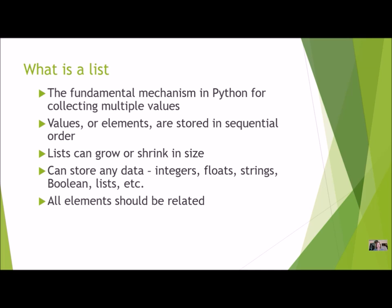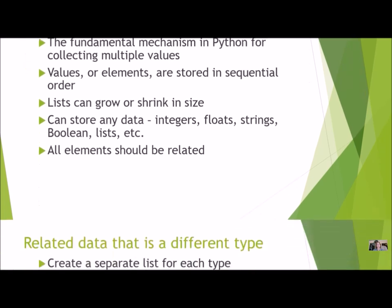If I'm doing names, all the elements should be names; if I'm doing ages, all the elements should be ages, and I really shouldn't mix the two. This can get pretty complicated when the data stored in the list is different types. They might still be related, but if they're not the same type, they shouldn't be in the same list.